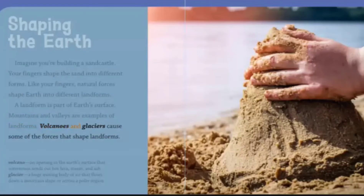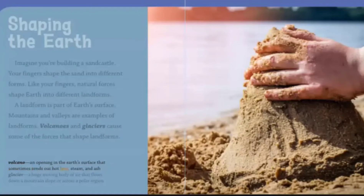Volcanoes and glaciers cause some of the forces that shape landforms. A volcano is an opening in the Earth's surface that sometimes sends out hot lava, steam, and ash. A glacier is a huge moving body of ice that flows down a mountain slope or across a polar region.